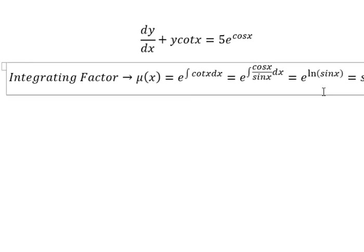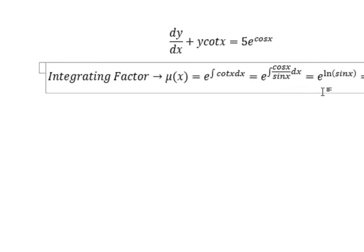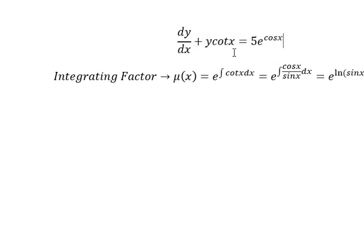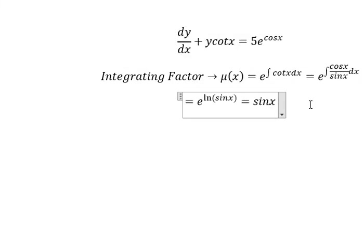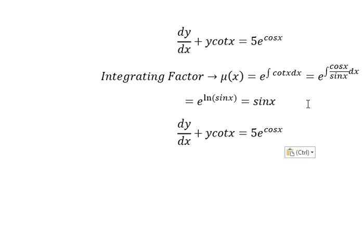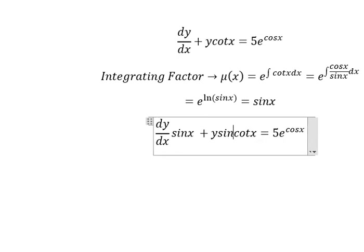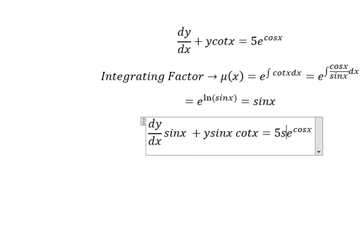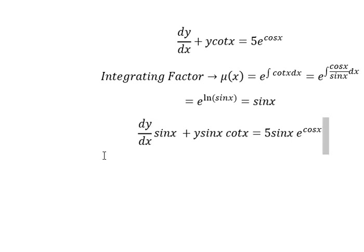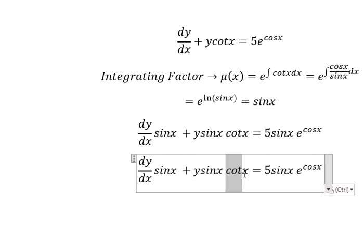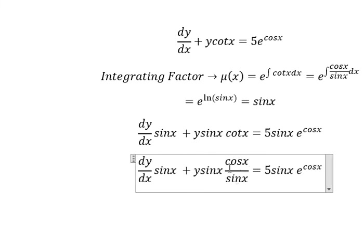We have sine x here, which means we need to multiply both sides by sine x. cot(x) is cosine x over sine x — the sine x terms simplify.